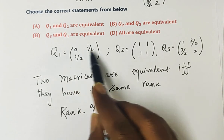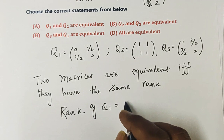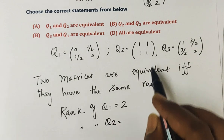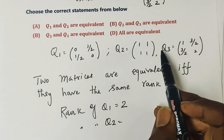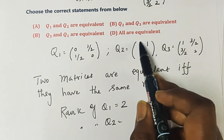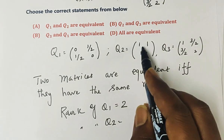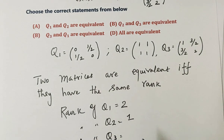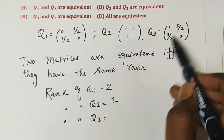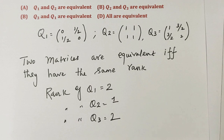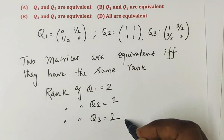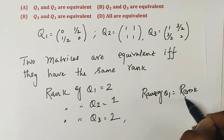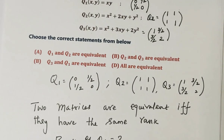Computing the ranks: for q1's matrix [0, 1/2; 1/2, 0], the rank is 2. For q2's matrix [1, 1; 1, 1], the rank is computed. For q3's matrix [1, 3/2; 3/2, 2], we compute the rank similarly, obtaining rank 2.